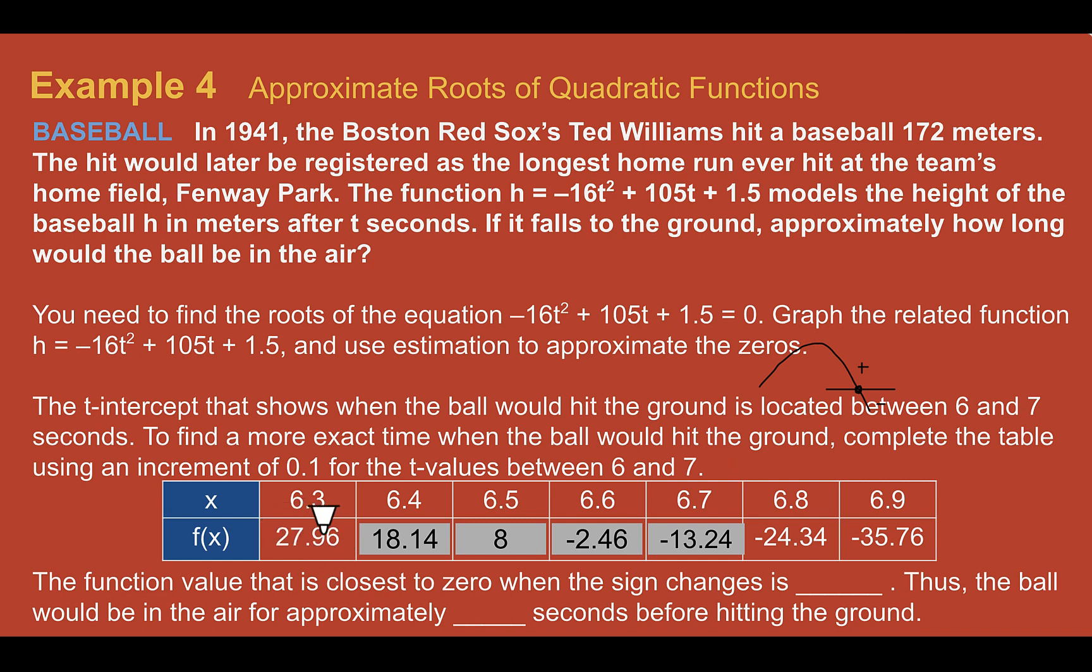So if we're looking through these, we have 27.9. It's going down to 18.14, down again to 8. Here is our spot where it switched from positive 8 to negative 2.46. So it must have hit the ground somewhere between there. Now, when we're approximating, we can just pick whichever one's closest. So the closest to zero is that negative 2.46. It's only that amount away compared to 8 away. So the ball must have been in the air about 6.6 seconds before hitting the ground.